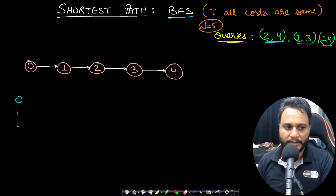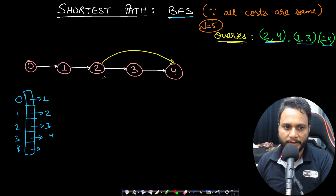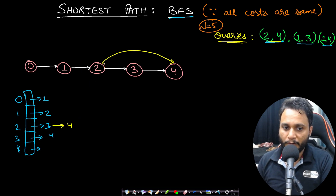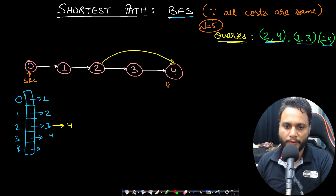We build an adjacency list for cities 0 to 4. Initially: 0→1, 1→2, 2→3, 3→4, and 4 has no neighbors. After connecting 2 and 4, we add 4 as adjacent to 2. Since we only care about moving from 0 to n-1, all edges are kept directed. Now we apply BFS from source node 0 to destination node n-1, counting hops.